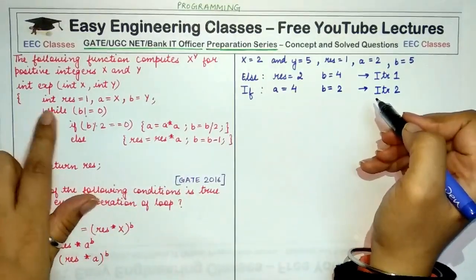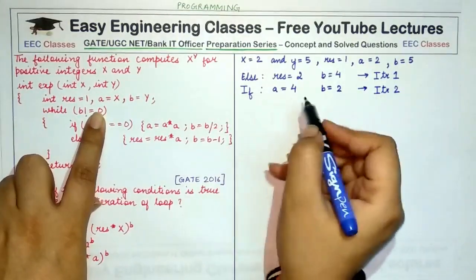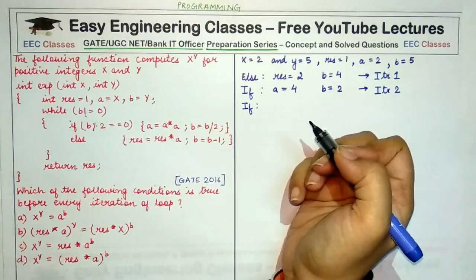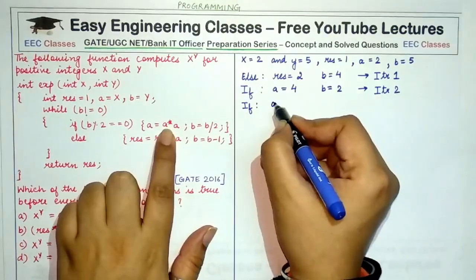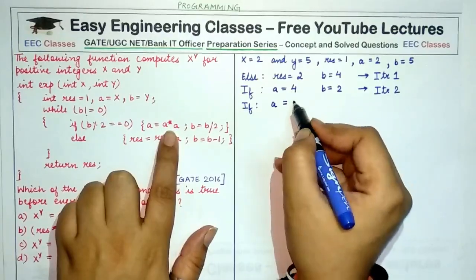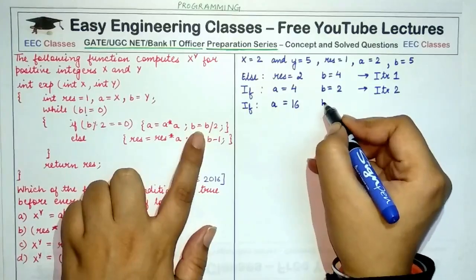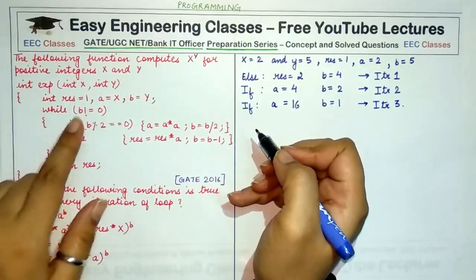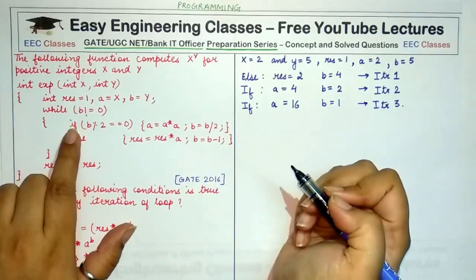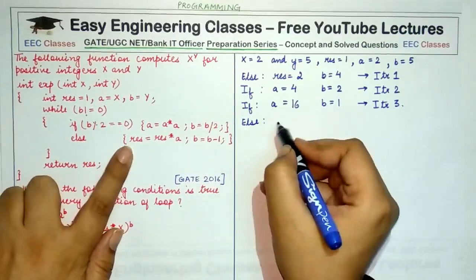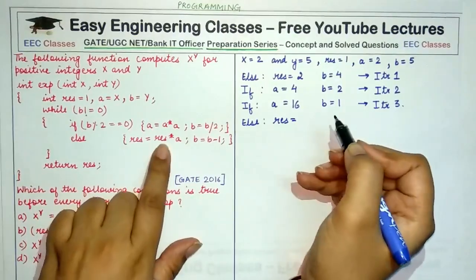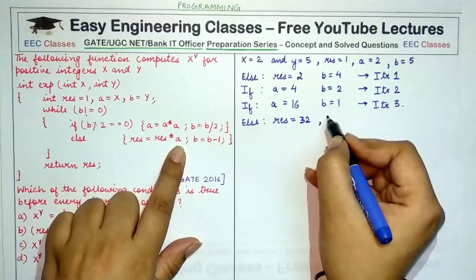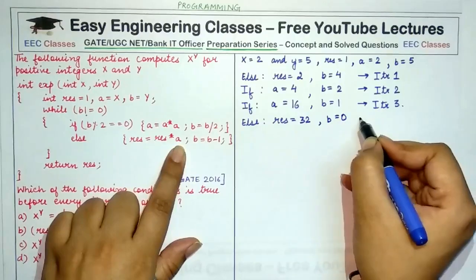In iteration 3, b is 2 and not equal to 0, so we enter the loop. The if condition is again true since b is a multiple of 2. A is multiplied by itself: a = 4 × 4 = 16, and b becomes 1. In iteration 4, b is still not 0. The if condition is false, so we enter else: result becomes result × a = 2 × 16 = 32, and b becomes b − 1 = 0. This completes iteration 4.